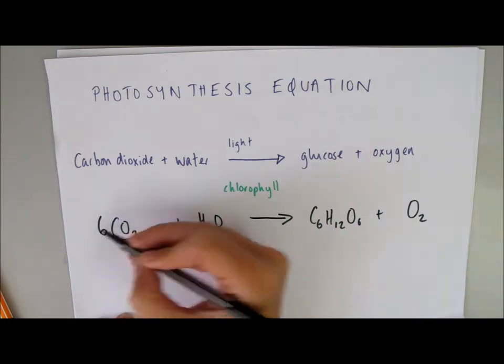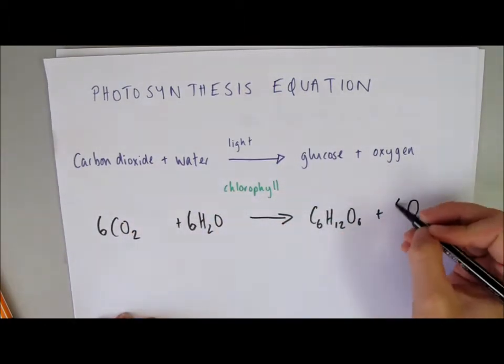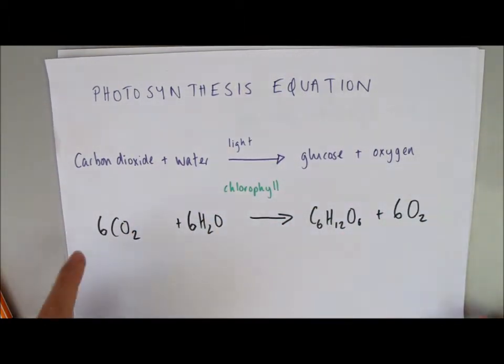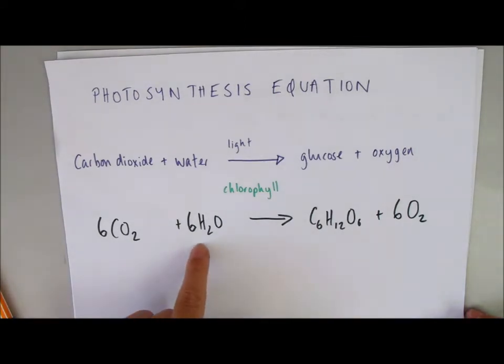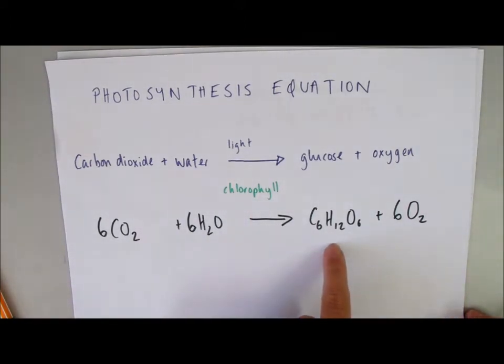So, it's 6CO2 plus 6H2O in the presence of light and chlorophyll goes to glucose C6H12O6 plus 6O2.